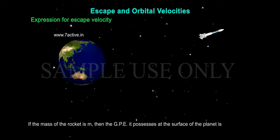GPE. If the mass of the rocket is m, then GPE it possesses at the surface of the planet is, we know, gravitational potential is equal to minus GM by R.